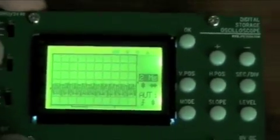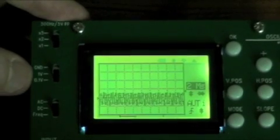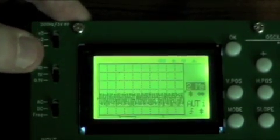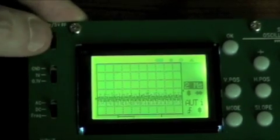So on the side here, this is my volt per division. I have it on 1 volt times 2, so 2 volts per division. I'm going to change it to 5 volts per division.